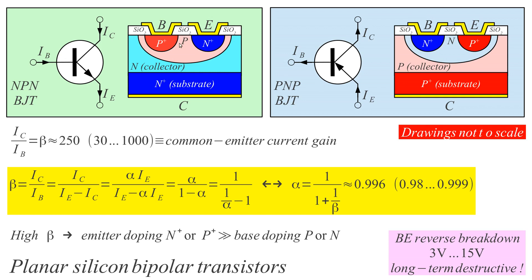For an NPN transistor, we first make a deep P doping for the base, then an N-plus doping for the emitter, and also a stronger doping in the base for a good ohmic contact — otherwise we would have a rectifying junction between the P and the metal base contact. Exactly the opposite polarities apply to the PNP transistor: first an N doping for the base, then P-plus doping for the emitter, and an N-plus doping for a good ohmic contact to the base. High doping concentration forms junctions without rectifying properties.